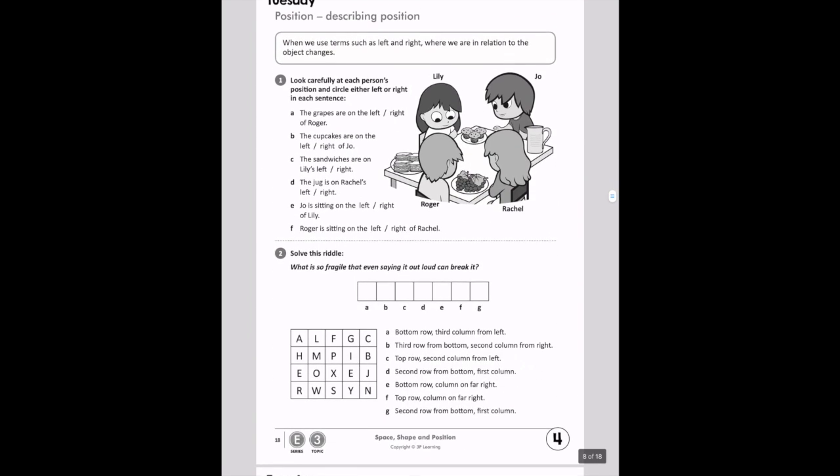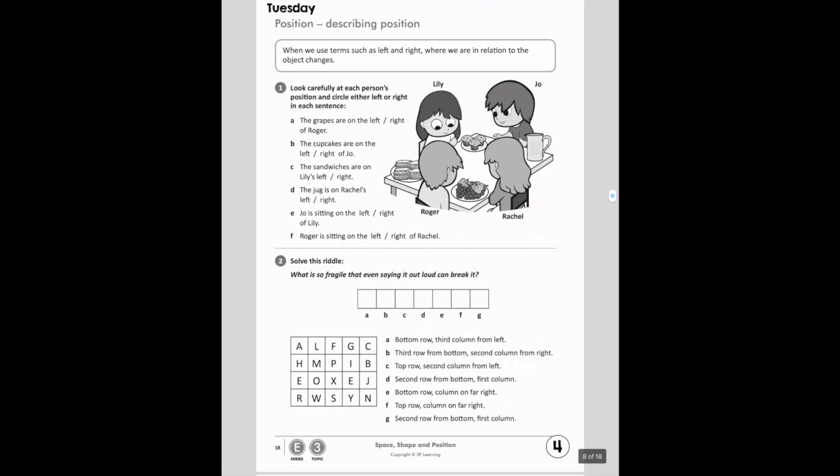On the next page, you're going to be describing your position. When we use terms such as left and right, where we are in relation to the object changes. It kind of means our left and right is different than someone else's left and right, depending on where they're standing or where they're sitting. Let's look carefully at each person's position. We've got Lily here, Joe here, Rachel here, and Roger here.